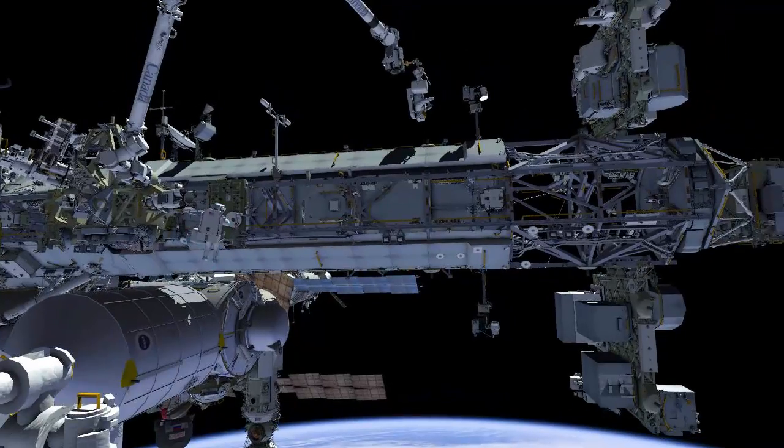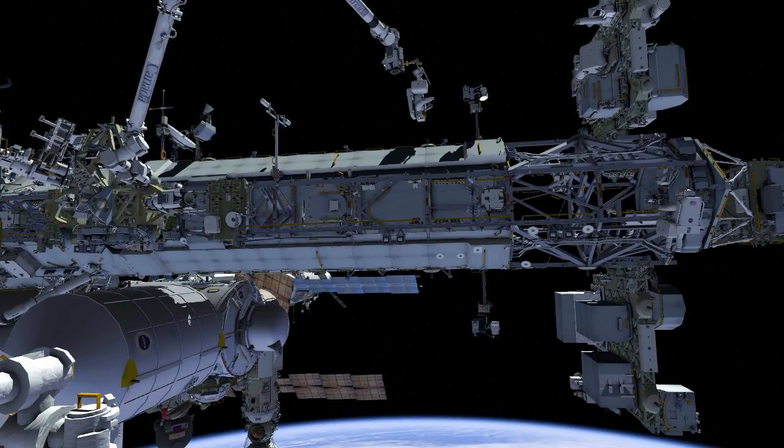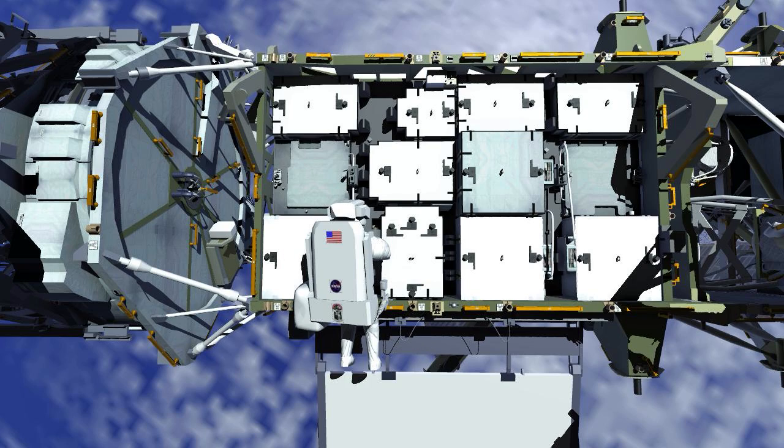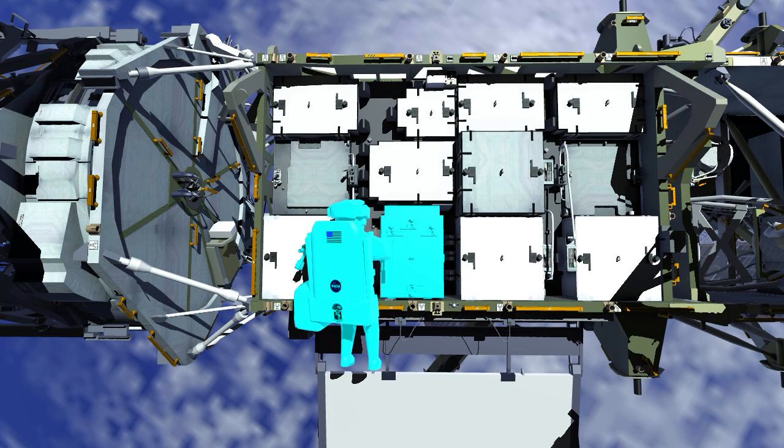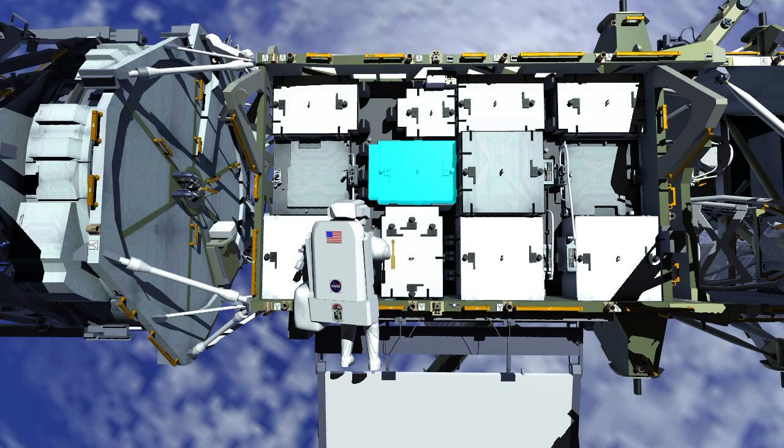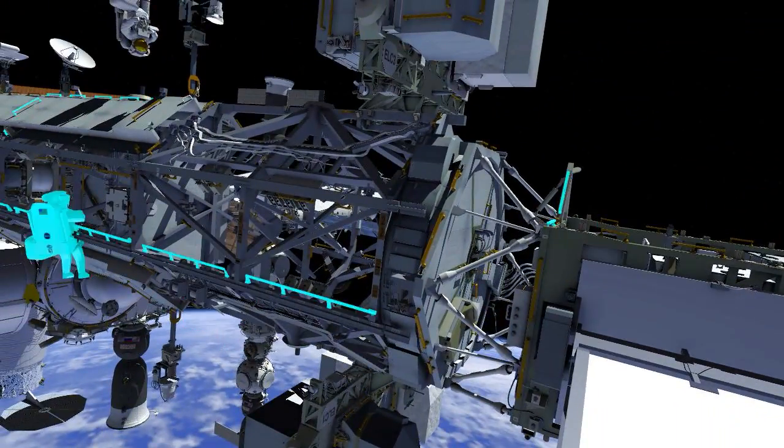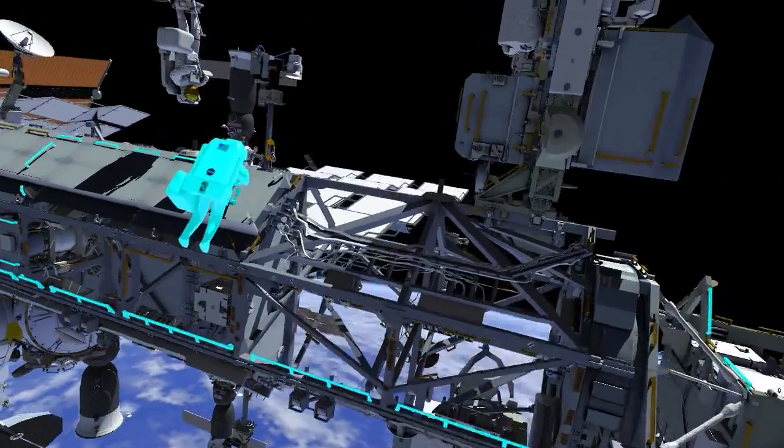EV2 retrieves a different tool bag and translates to the port 4 integrated electronics assembly worksite. Several bolts on the 4 alpha side will be released and retorqued at a lower setting. This will make any future robotics replacement operations of those equipment boxes easier to perform. Then EV2 rejoins EV1 at camera port 8.